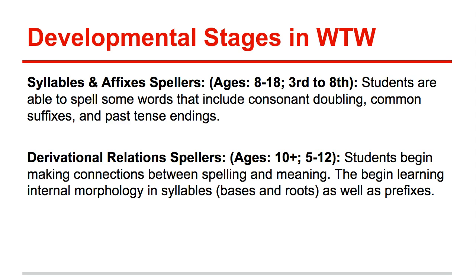From ages 8 to 18, roughly third through eighth grade — and these are prototypical examples — we get into syllable and affix spellers. Students are able to spell most words they encounter, even challenging ones with consonant doubling in the middle or common suffixes they've seen repeatedly. Then, ages ten and beyond — fifth grade through twelfth grade and beyond — students are really making connections between the spelling and the meaning of the word. They're thinking about morphemic knowledge, syllables, prefixes, suffixes, and roots, making sense of how all those component parts impact meaning. It's pretty sophisticated use of language at this point.